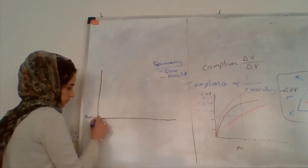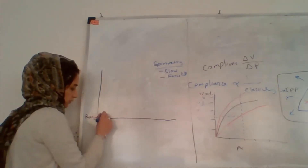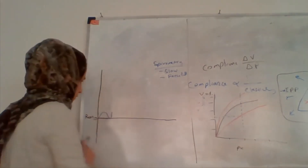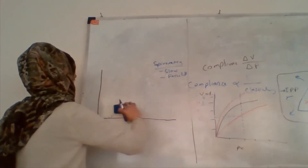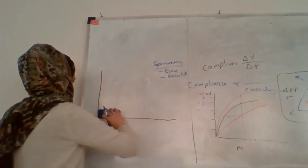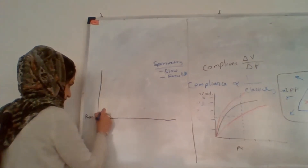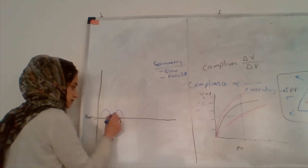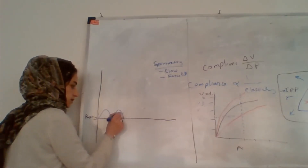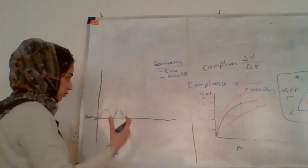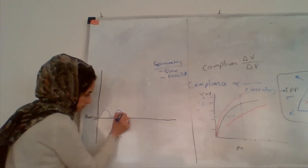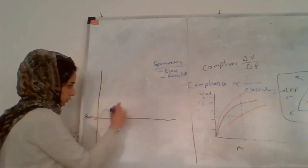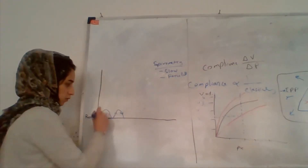First, when a person has normal breathing — normal inspiration and normal expiration — we can draw somewhat larger curves: inspiration, expiration. Expiration is upward, inspiration is downward. This is how it will be recorded in the device. So you have this normal breathing, or tidal breathing.